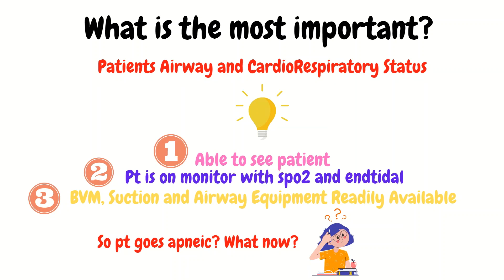The most important thing we as a nurse need to be focused on is the patient's cardiorespiratory status — are they ventilating and oxygenating adequately? Is perfusion steady? Is the BP holding? Key things include being able to see the patient, having the patient on the monitor including SpO2 and end-tidal, and having BVM, suction, and airway equipment readily available. You are looking for chest rise and fall. If end-tidal CO2 starts to increase, the patient isn't ventilating appropriately. If SpO2 starts to drop, the patient is not oxygenating as they should be.